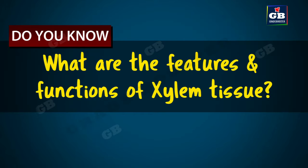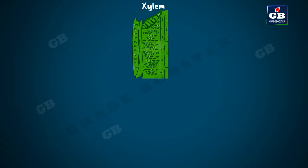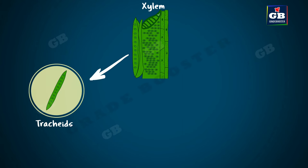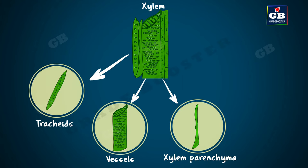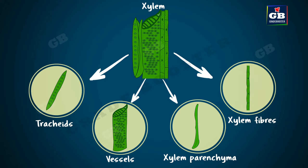What are the features and functions of xylem tissue? Xylem consists of tracheids, vessels, xylem parenchyma, and xylem fibers.